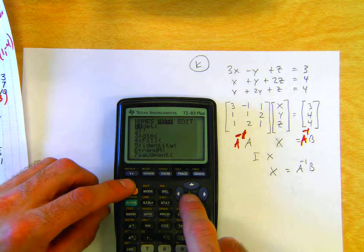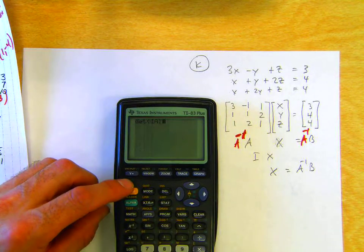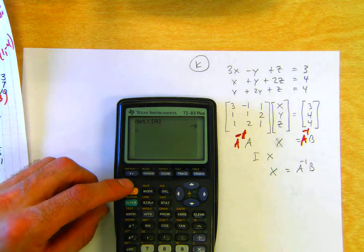So let's see, math determinant of matrix A, it's negative 9, that means it exists.